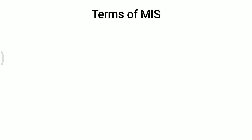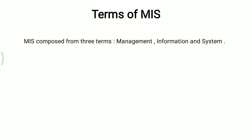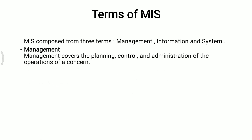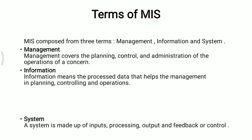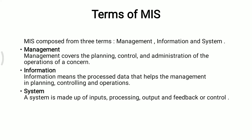Terms of MIS. MIS is composed of three terms: Management, Information, and System. Management covers the planning, control, and administration of the operations of a concern. Information means the processed data that helps the management in planning, controlling, and operations. A system is made up of input, processing, output, and feedback or control.